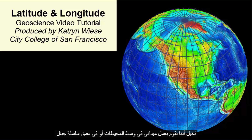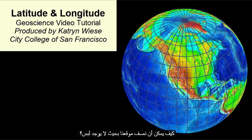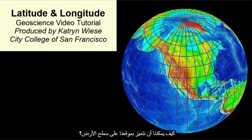Imagine we're doing fieldwork in the middle of the oceans or deep in a mountain range. How can we describe our location in such a way that there is no confusion? How can we uniquely locate ourselves on Earth's surface?